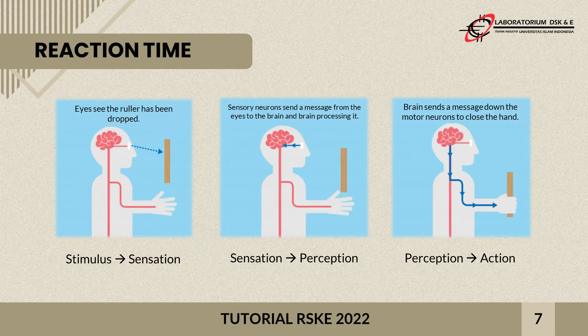To understand the reaction time process more clearly, consider this illustration. There is a stimulus in the form of a falling ruler. The stimulus forms a sensation — the eye sees the falling ruler and passes the information to the brain. At the perception stage, the brain processes the information to decide what action to take. The person decides to catch the ruler, and this decision is transmitted through the nerves, resulting in the action where the respondent's hand catches the ruler.